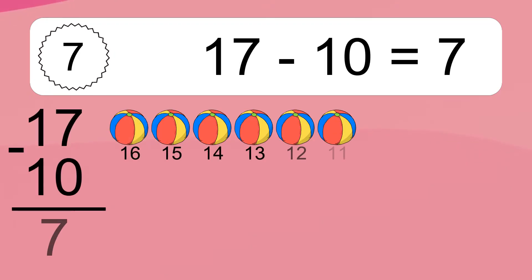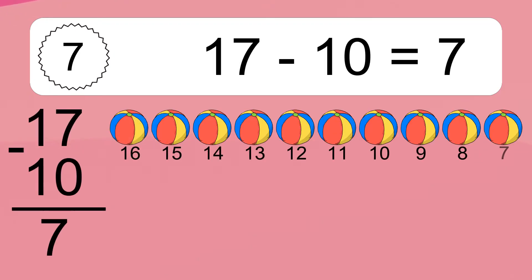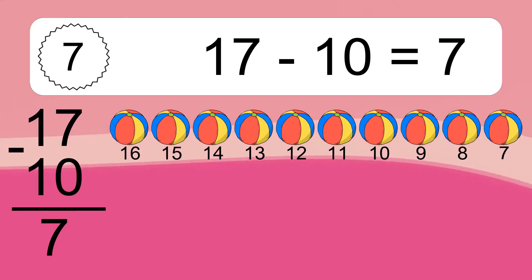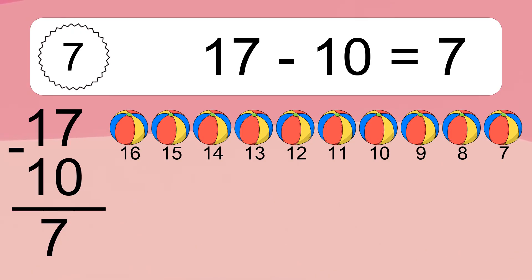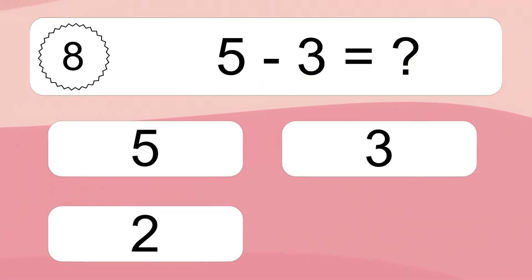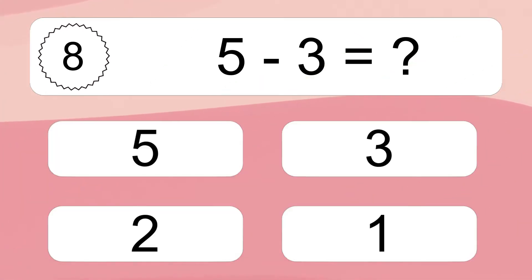17 minus 10 equals what? 17 minus 10 equals 7. Let's count it. 16, 15, 14, 13, 12, 11, 10, 9, 8, 7.